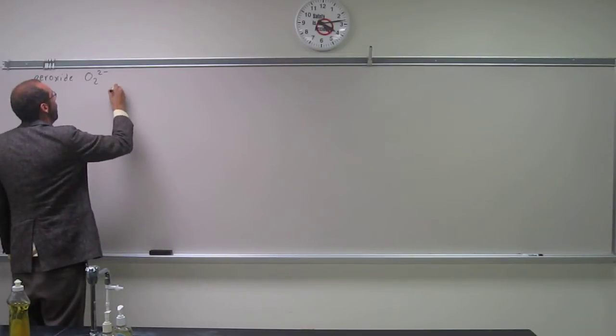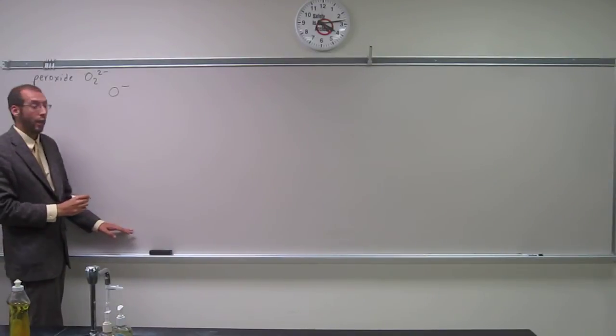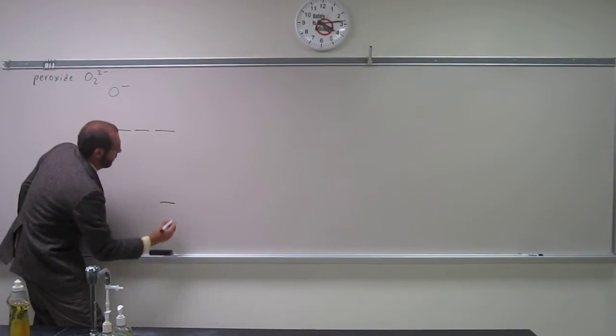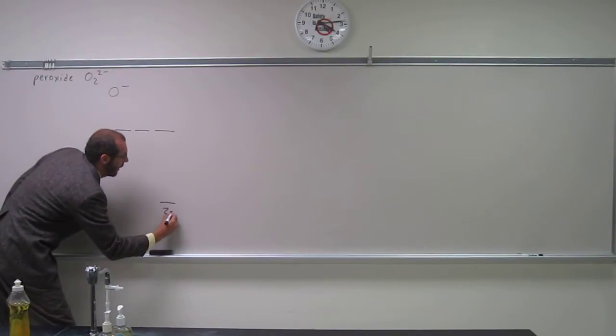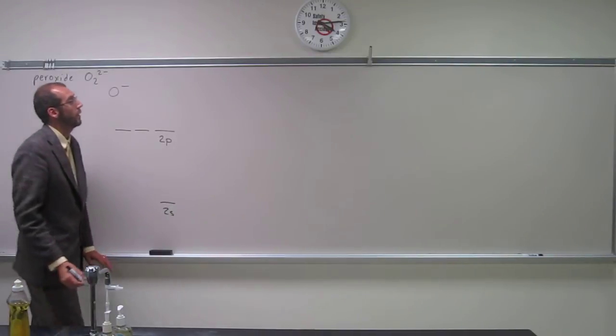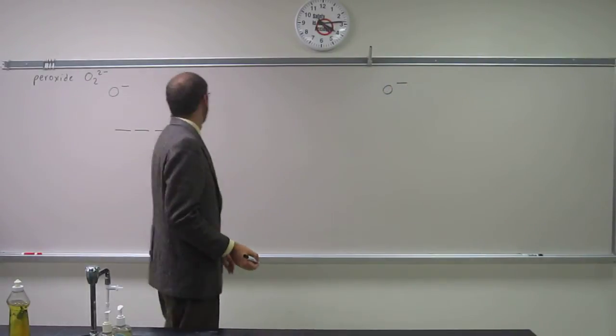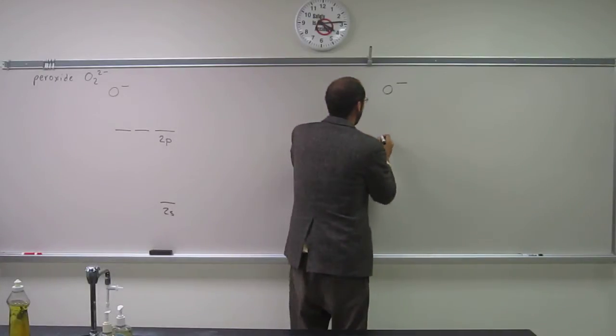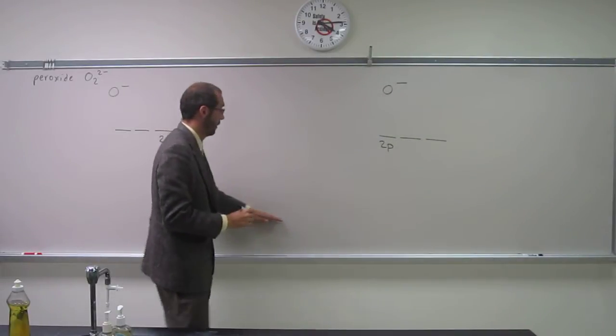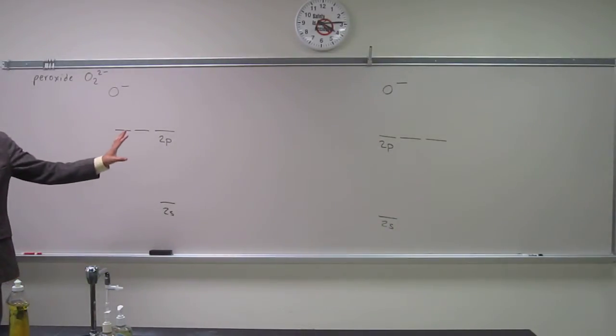So we'll do O minus here, and if you remember, the valence shell has the three Ps and the one S, right? So this is the 2s, and these are the three 2p's. And it's going to have those same orbitals. Is everybody okay with what I've done so far?